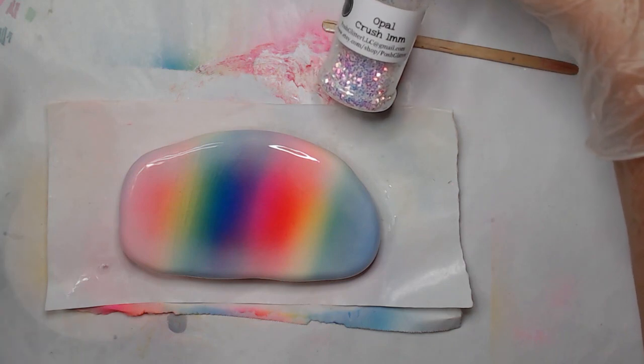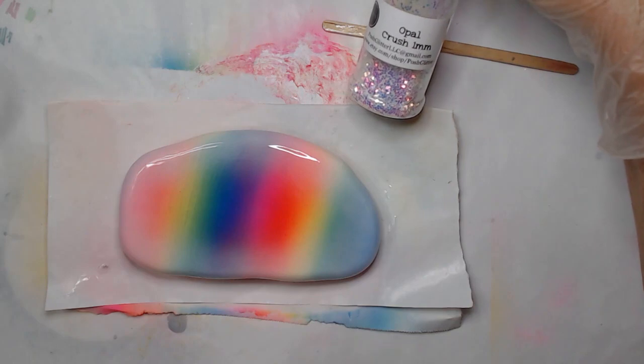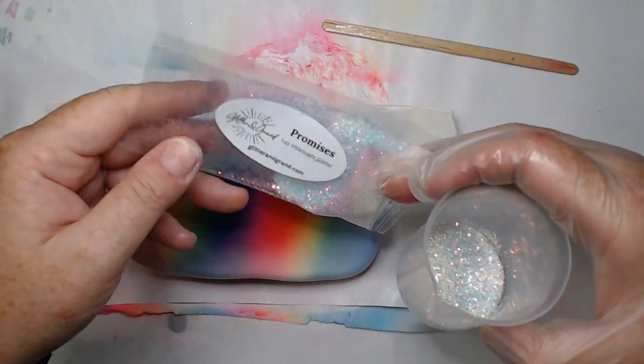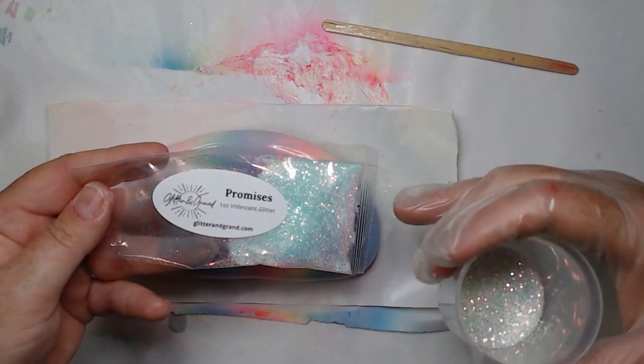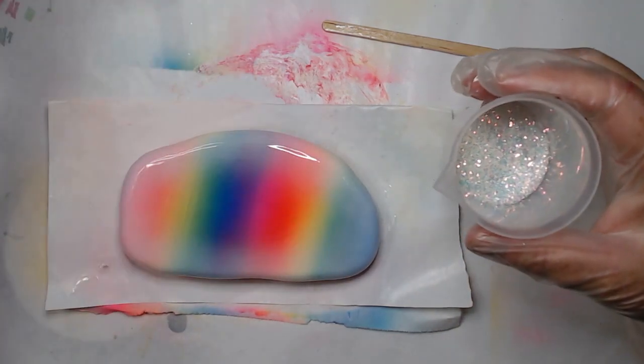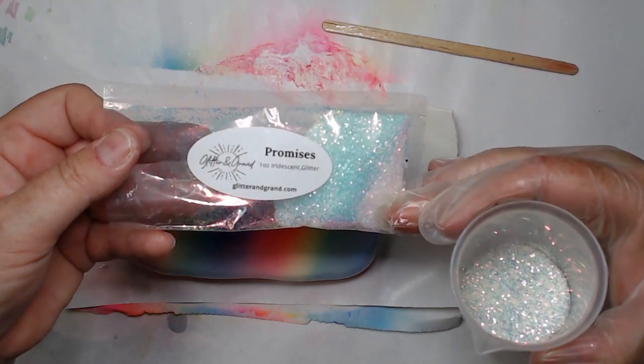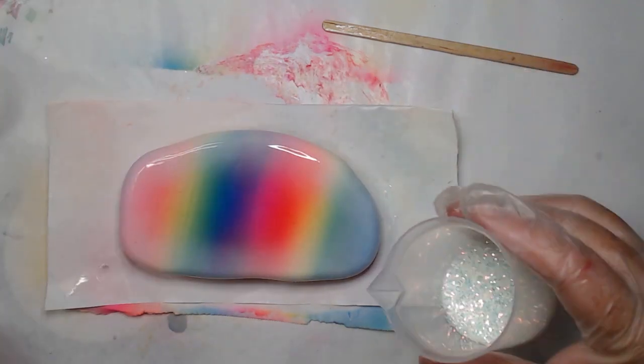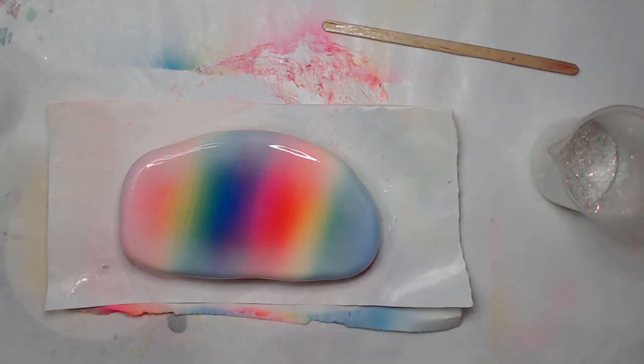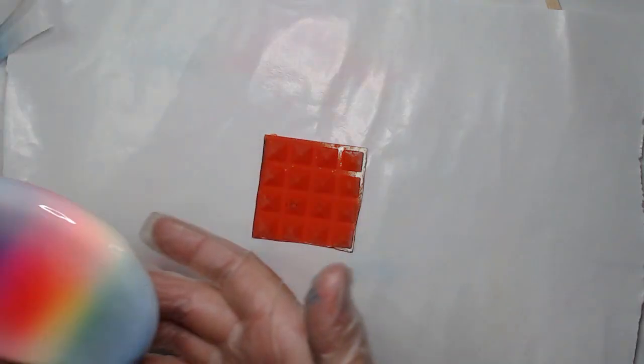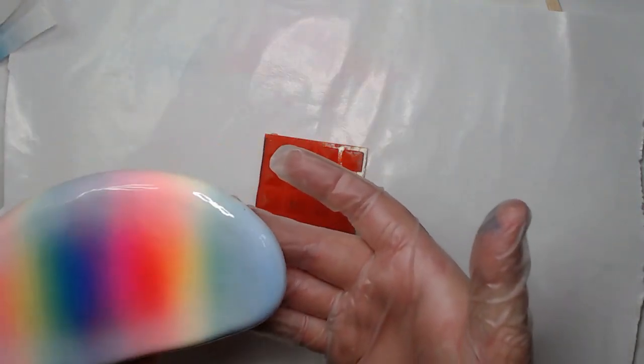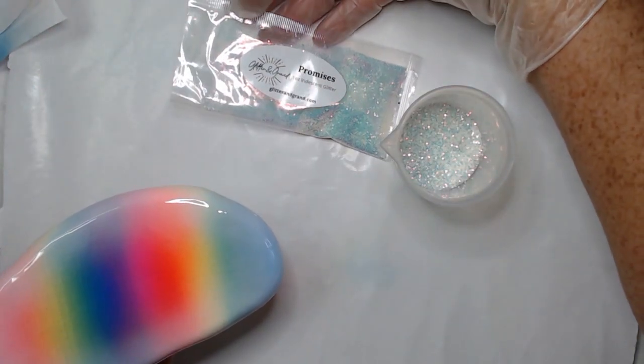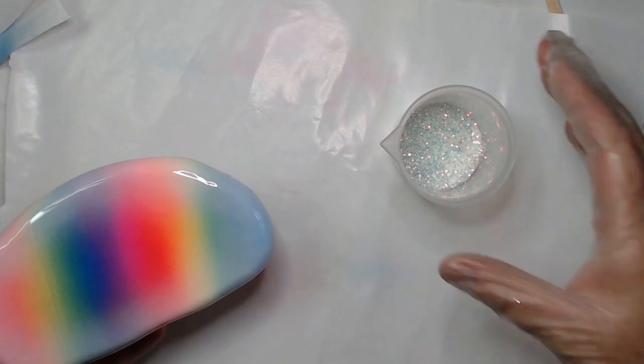So now I'm taking my glitter, and again, I originally thought I was going to use this Opal Crush, which is a bigger chunk of glitter, and then I decided I was going to switch to, this is a much finer glitter, and it's by Glitter Grand, or Glitter and Grand, and I will link that below in the description. And this is Promises, but any kind of glitter you want, you just want to make sure that it's a translucent glitter, and I'm using kind of an opal shift glitter. And I've put down a piece of butcher block paper to catch the glitter so that I don't waste a bunch of it.